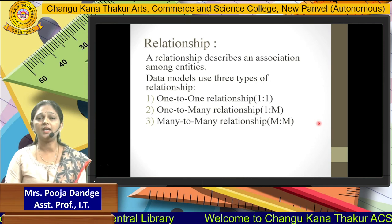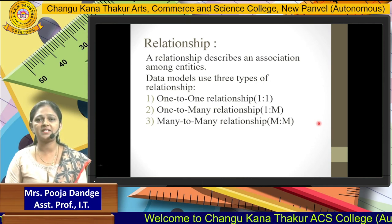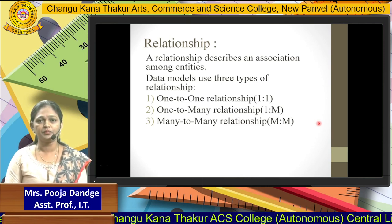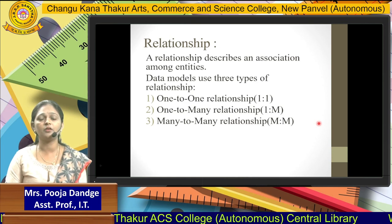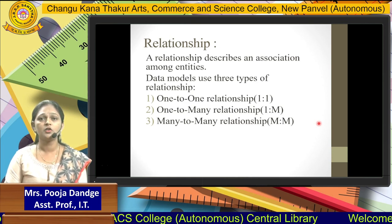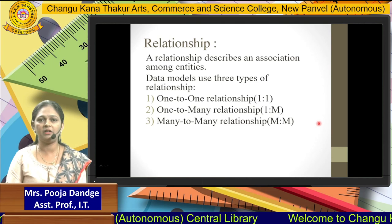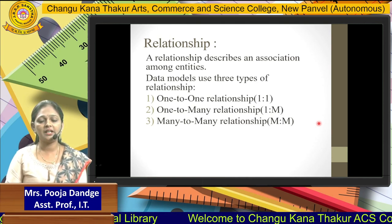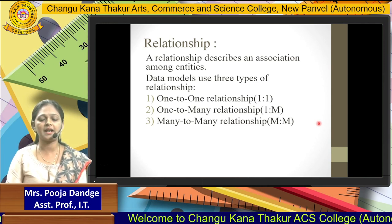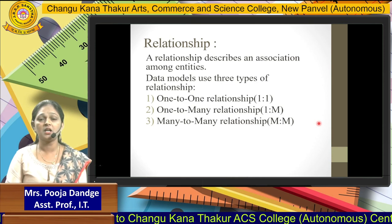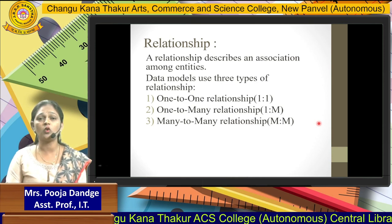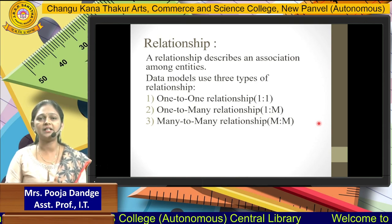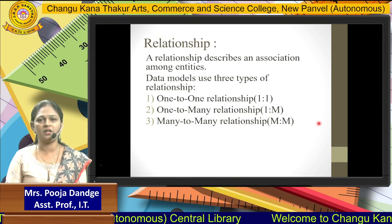The next concept is relationship. Whenever we store data in the database, we have to establish a relationship between our data so that we can handle every piece of data at any time. We maintain the relationship between our entities in the database. Relationship describes the association among the entities — that is, what type of relation is present between the entities. Relationship is described in three different types.